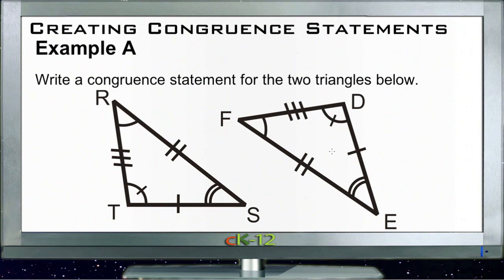That means that in order to write this congruent statement we need to figure out what that order is, what that corresponding order is, so that we can write it the same for both triangles. If we take a look, angle F here, the one that's marked with a single angle delineator, is the one that's corresponding to angle R up here on the other triangle. This one over here is corresponding to this one here.